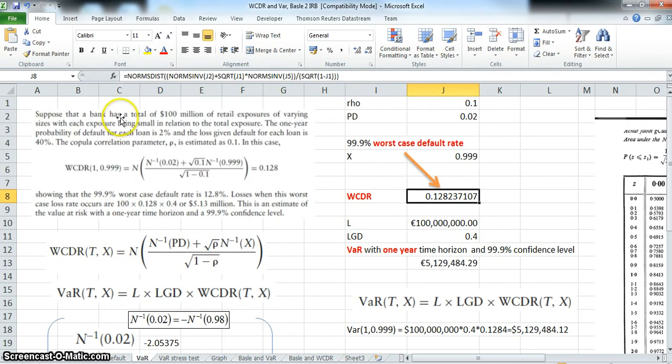If we take the example we have here of a 100 million dollar loan book with a loss given default of 0.4, to estimate the Value at Risk we take the loan principal L, 100 million, by the 0.4 loss given default, multiplied by the worst-case default rate. When we work that through, we have a Value at Risk at the 99.9% confidence level of 5 million 129,484.